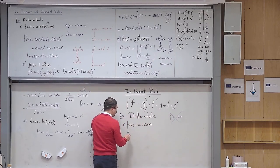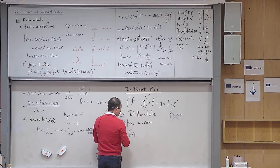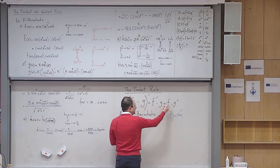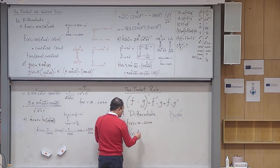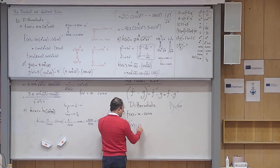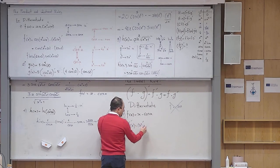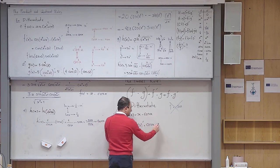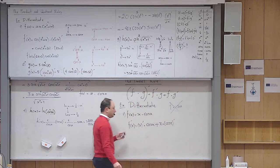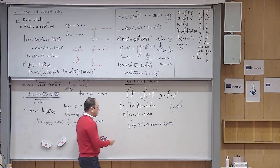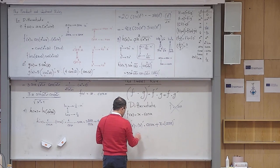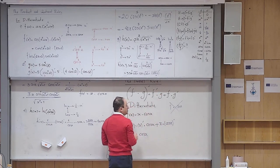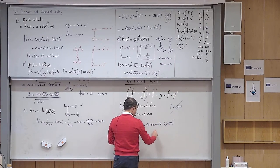That's a product. So how should I do it? Take the derivative of the first one, multiply by the second one itself, plus the other way around — the first one itself multiplied by the derivative of the second. So: (x)'·cos(x) + x·(cos x)' = 1·cos(x) + x·(−sin x) = cos(x) − x·sin(x). That is the derivative.